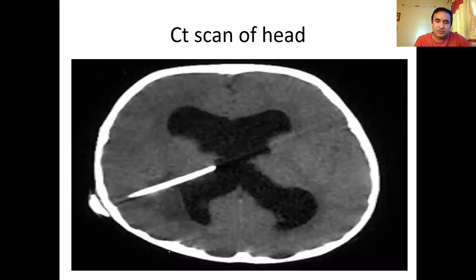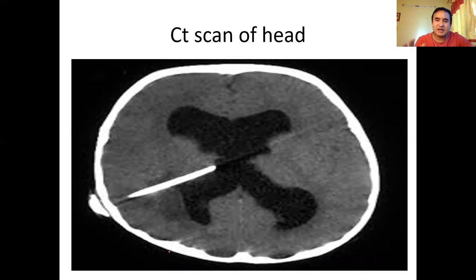Sometimes we need to do a CT scan before lumbar puncture — specifically if GCS is less than 8, if the patient is having seizure episodes, if there is focal neurological deficit, or if the patient is immunocompromised. In such suspected meningitis cases, a CT scan must be done first. This typical CT image shows hydrocephalus, which is one of the deadliest complications of meningitis.